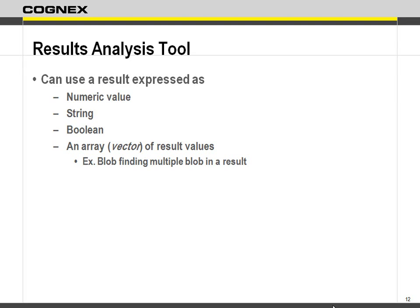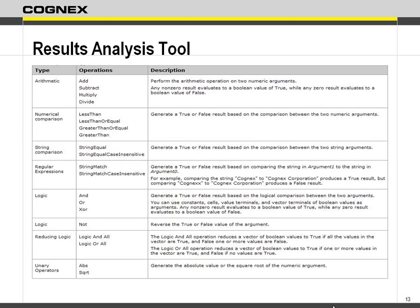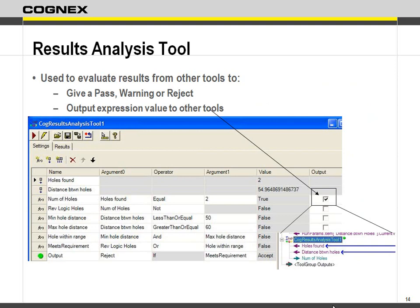With the results analysis tool you can start getting into more rules. It can do arithmetic calculations, string comparisons, unary operators — a whole host of different things. You can also add it as an output, but be careful: adding it as an output only gives you the value of whether it's true or false, not whether you've actually done a calculation.